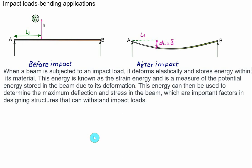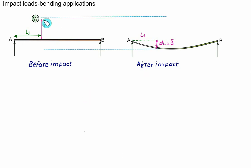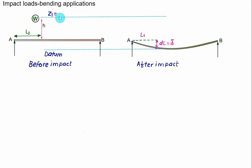To apply the law of conservation of energy, two references are taken: the initial position and the position after impact. The bottom reference is considered the datum. The initial position has the load at height h, so the corresponding potential head z1 equals h plus dl. Initially velocity is zero, and at the datum position z2 equals zero and velocity v2 is also equal to zero.